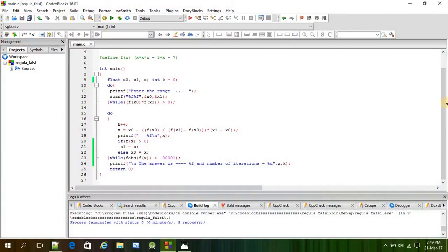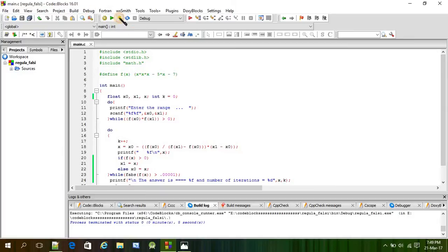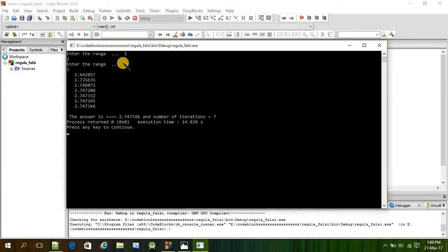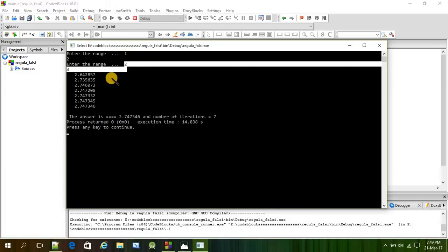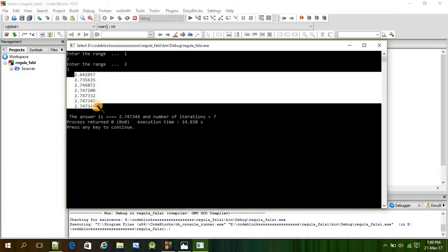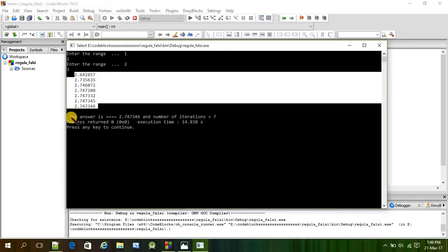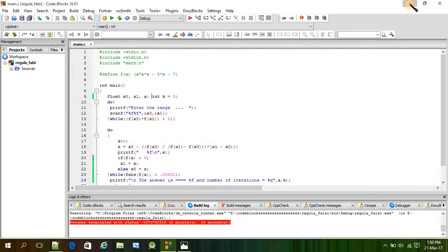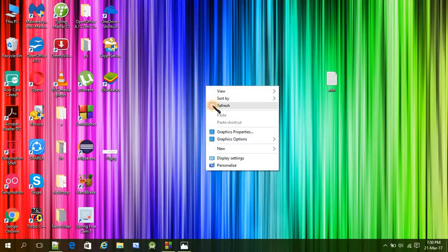And if you want to run this program, here is the same program and let's run it. And let's say first we have given the value of range 1 and 2, so this is not the range for this equation. So let's say 2 and 3. Okay, the answer lies between 2 and 3 so it has taken the range and here are our values after every iteration. And the root for this equation is 2.747346 and number of iterations needed to calculate the root is 7.